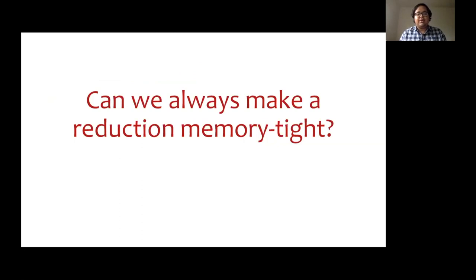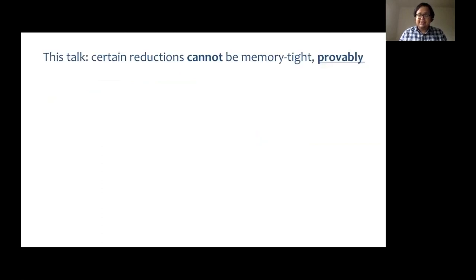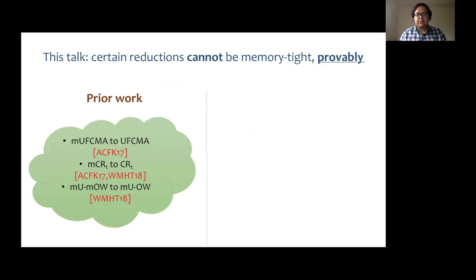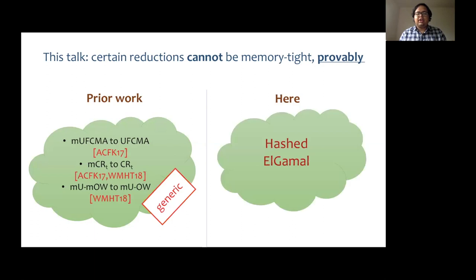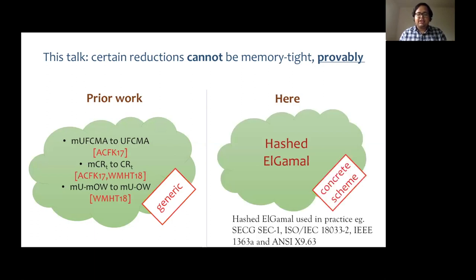Therefore, the central question is whether we can always give a reduction which is memory tight. In this work, we show that certain reductions cannot be made memory tight provably. There has been some prior work on this in the last few years — these are impossibility results about generic reductions. Our work, on the other hand, proves an impossibility result for a concrete scheme. In particular, we look at the security of hashed Elgamal, which is widely adopted in practice. The scheme was conjectured to not have a memory tight reduction by Auerbach et al., and this work takes a substantial step towards confirming this conjecture.